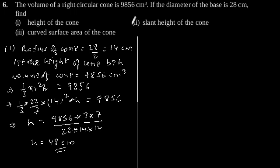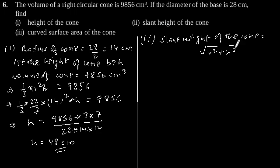Second part is find slant height of the cone. Slant height of the cone is equal to square root of R² plus H².